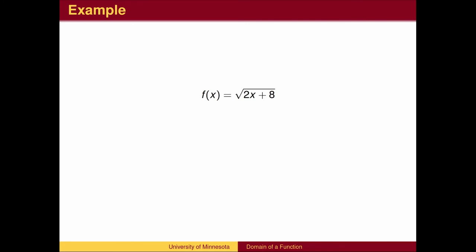Here is another example. We cannot take the square root of a negative number, so the quantity that we are taking the square root of must be greater than or equal to 0. We then solve this inequality for x.